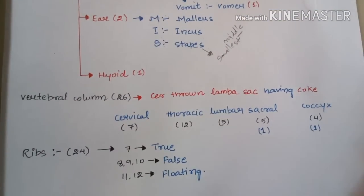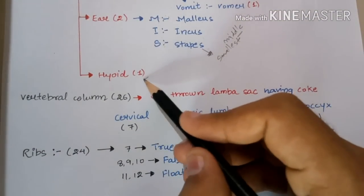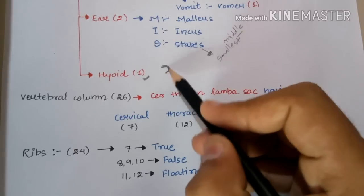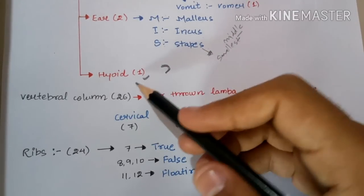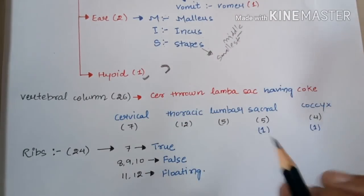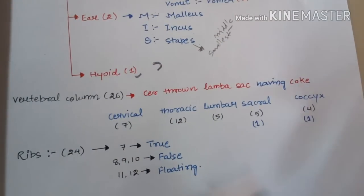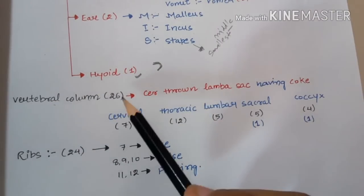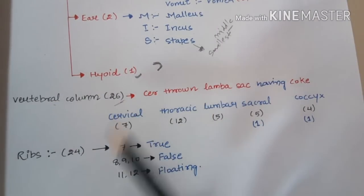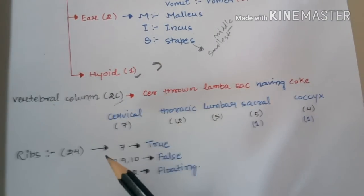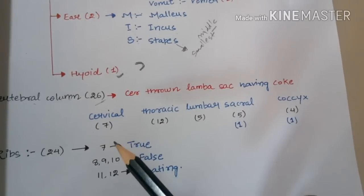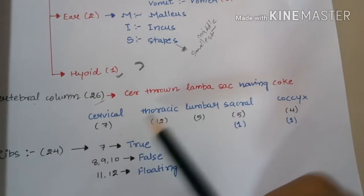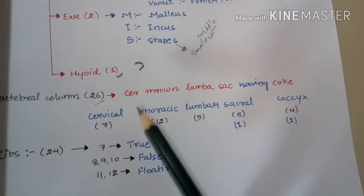After the ear bones, there is a single C-shaped bone known as the hyoid bone. Then we talk about the vertebral column, which has 26 bones. Many people are confused about why it is 26 — let's understand the sequence first.